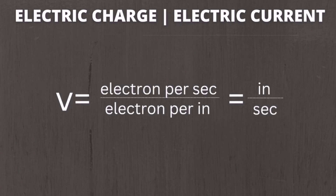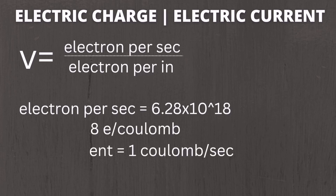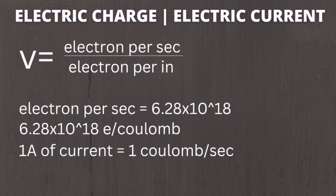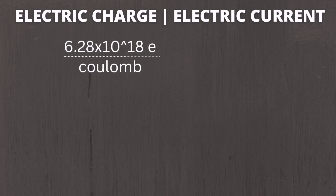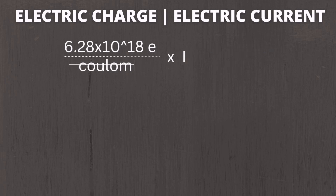The last topic is electron velocity in conductors. The formula is V equals electrons per second divided by electrons per inch, with the unit being inches per second. Electrons per second has the value 6.28 times 10 raised to 18, since 1 ampere involves motion of 1 coulomb per second. So electrons per second equals 6.28 times 10 raised to 18 electrons per coulomb multiplied by I coulombs per second — the coulombs cancel, giving 6.28 times 10 raised to 18 electrons per second.